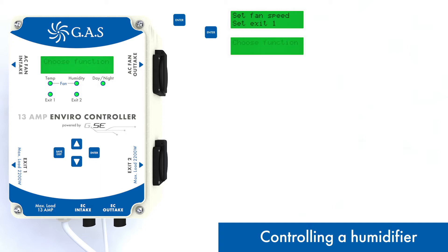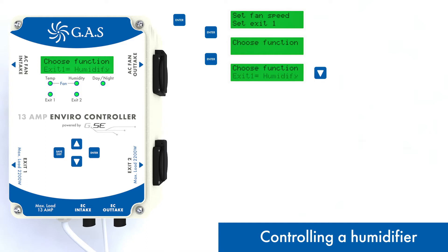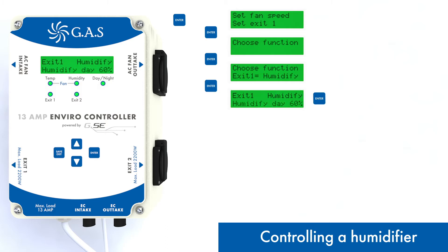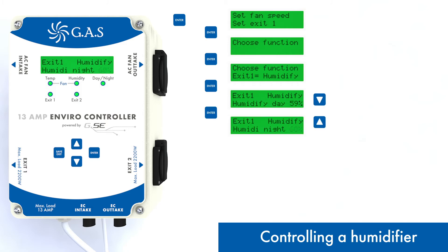You can control a humidifier connected to exit 1 or exit 2. Choose the Humidify function to set different relative humidities for day and night. The socket will turn on when the humidity falls below the value set.